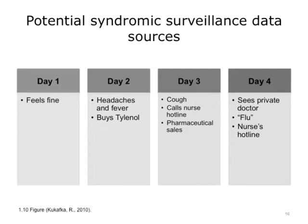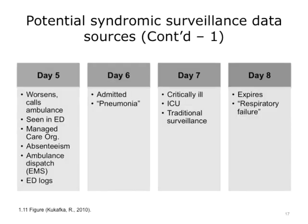On day three, perhaps there is onset of cough, and the patient might decide to call a nurse hotline. Day four might be the time when the patient decides to see a doctor. Events may then be monitored through nurses' hotlines. On day five, the condition would typically worsen. It's at this point when a patient might decide to call an ambulance, report sick, or be seen in the emergency department. All these events may be monitored by syndromic surveillance systems, as compared to the events noted on days seven and eight, which are monitored by traditional surveillance systems.